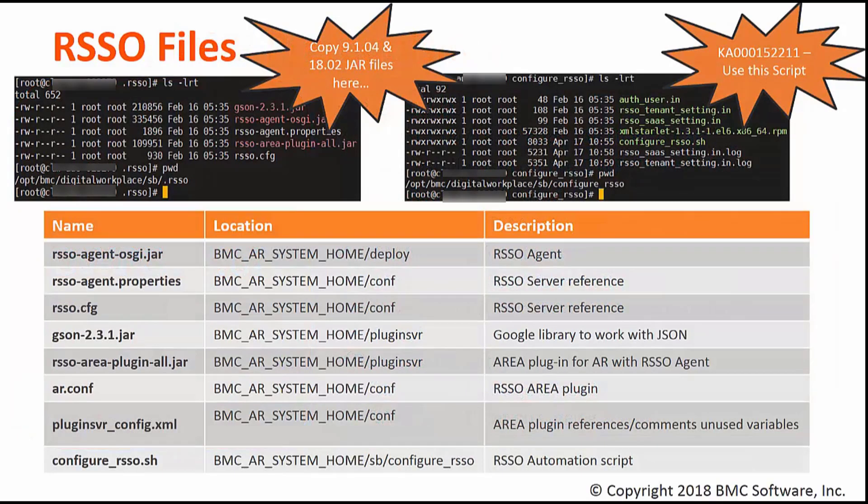When you install the catalog for the first time, you'll notice a hidden RSSO directory which contains all the files required for the integration with RSSO. Starting with 18.02, there is another configure_rsso directory. You can see all the files which are moved and updated by the script, and you can just imagine the amount of time you'll save by running it. Note that the current version available with 18.02 contains hard-coded references, so please use the updated script which is attached to the KA.